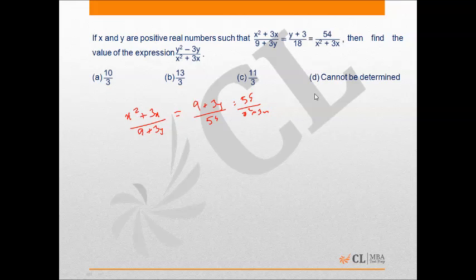And this is equal to 54 upon x square plus 3x. So this is of the form a upon b equals b upon c equals c upon a, and we know that a upon b equals b upon c equals c upon a only when a is equal to b is equal to c.